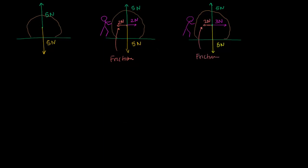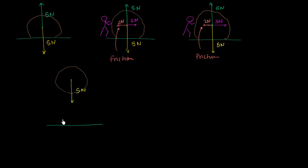Now let's imagine the ground is there, but the rock is not resting on it. The only force acting on the rock is the force of gravity, 5 Newtons downwards. But let's also consider some air resistance — you could view it as the force of friction of the air — and that is 1 Newton upwards, as the rock bumps into all of the air particles while falling to the ground.